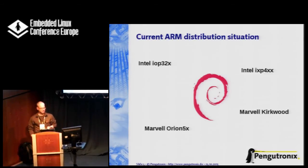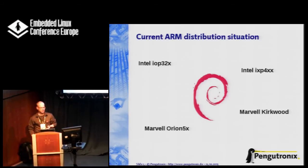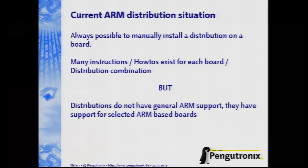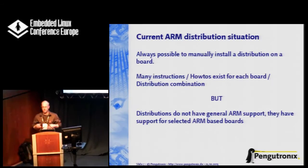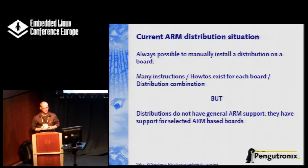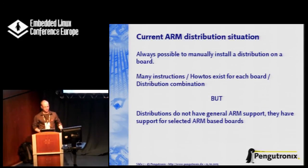Similarly with Debian, they support some selected SoCs, like the Marvell Kirkwood which is a very popular one. Fedora has a different set of boards — it supports the Beagle board and the Panda board. But it's all the same: there is no general ARM board support. It's always possible to install your distribution on a board somehow — you can get a root file system and you're on your own — but there's no general support, only support for certain ARM-based boards.